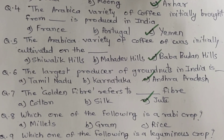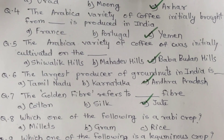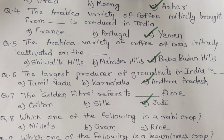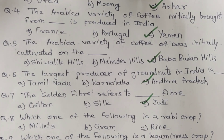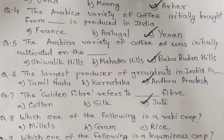Question 8. Which one of the following is a rubber crop? A. Millets. B. Gram. C. Rice. And the correct answer is B. Gram.